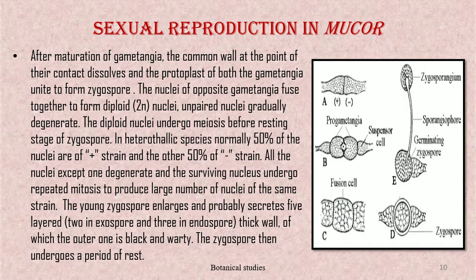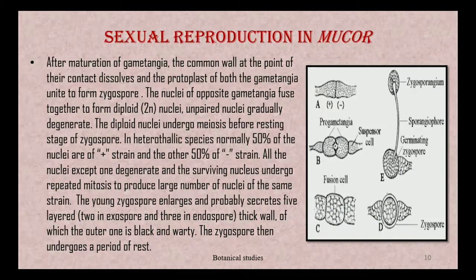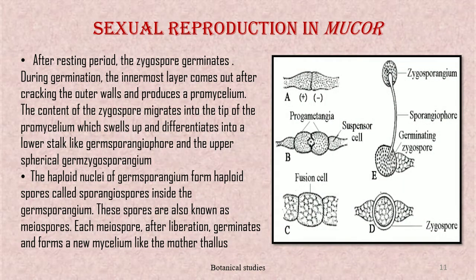All the nuclei except one degenerate, and the surviving nucleus undergoes repeated mitosis to produce a large number of nuclei. The young zygospore enlarges and secretes a five-layered thick wall — two layers in the exospore and three in the endospore — of which the outer one is black and warty. The zygospore then undergoes a period of rest. After the resting period, the zygospore germinates; during germination, the innermost layer comes out after cracking the outer walls and produces a pro-mycelium.